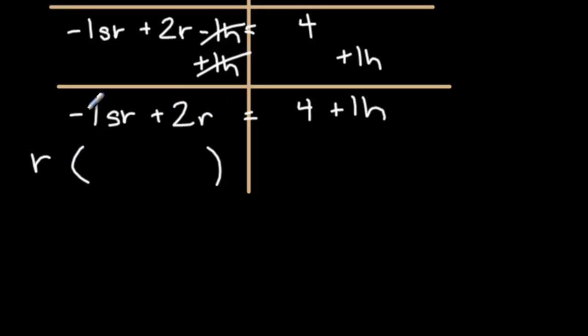If I use the distributive property, you end up getting what you had on the top. So that's just backwards of the distributive property. Set that equal to the other side, 4 plus 1h. When a number is next to parentheses, this is really multiplication.